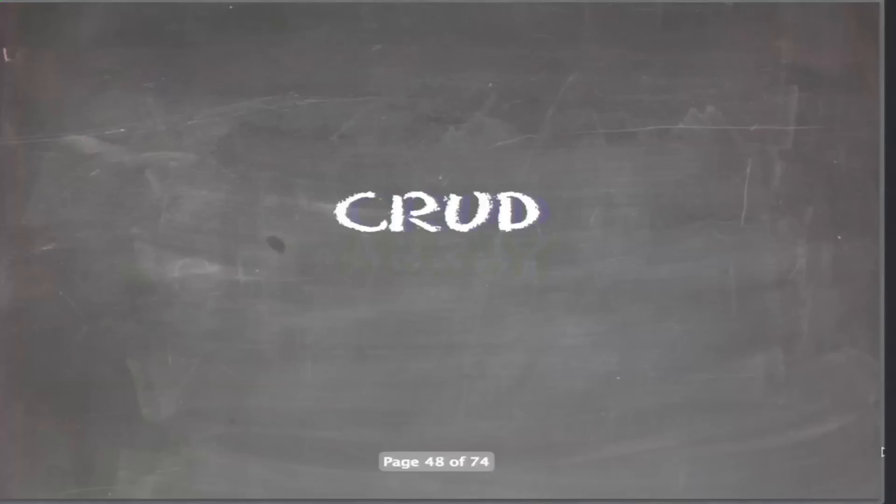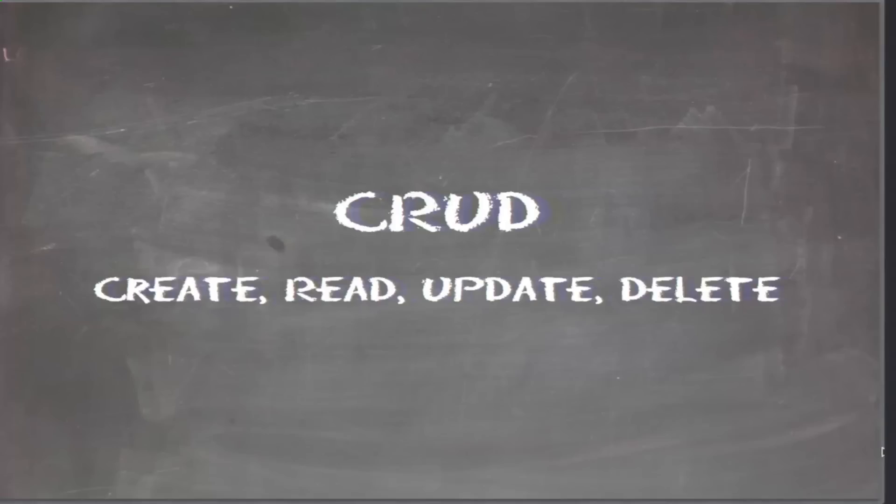What does ORM provide us? CRUD — create, read, update, delete. This is your standard interface. When you're using an ORM, you usually only do those four operations. The most obvious place we find the active record pattern in CakePHP is the model class. CakePHP has its own kind of interpretation of active record, but it's good and it does kind of follow the design.